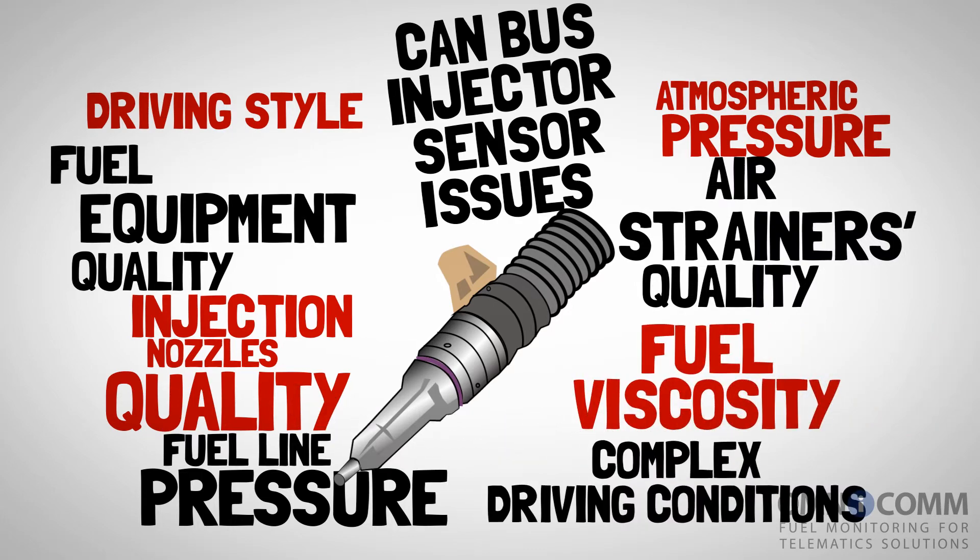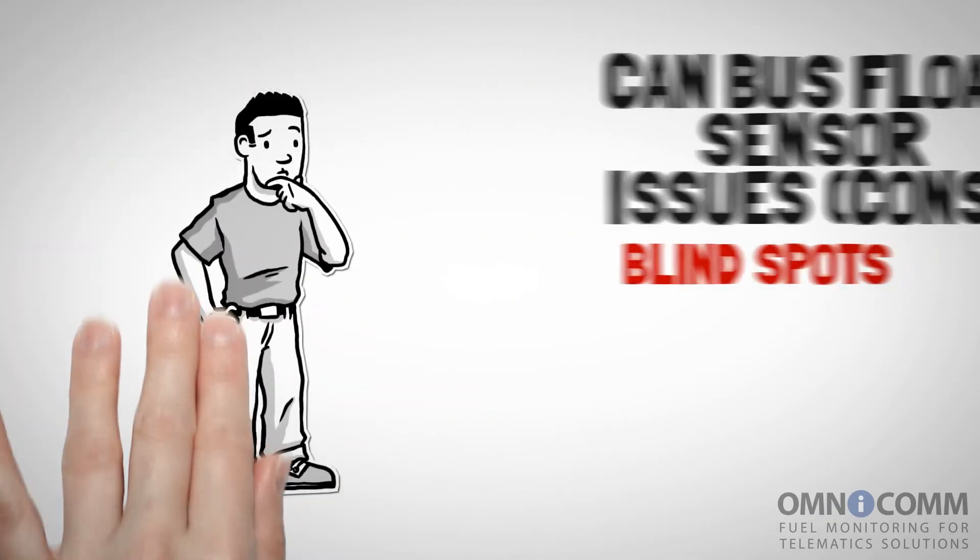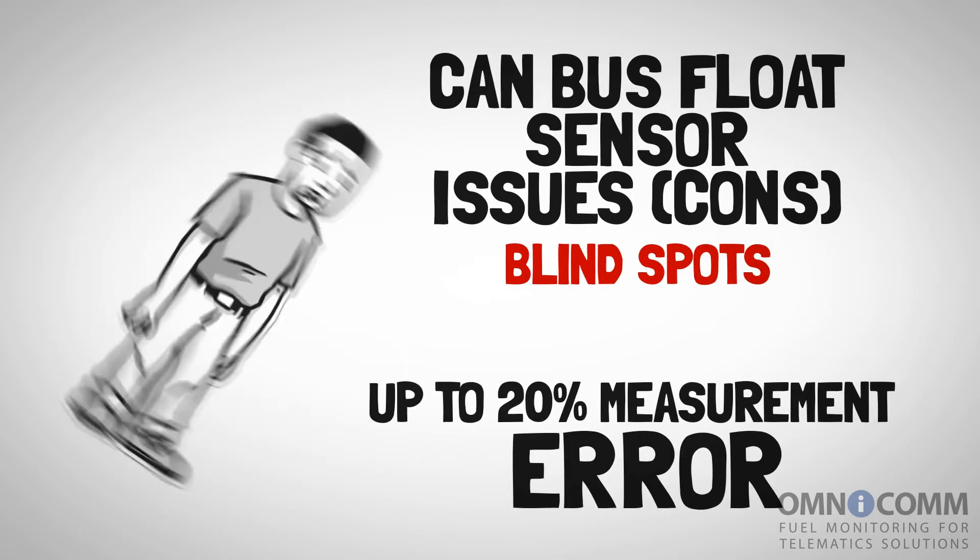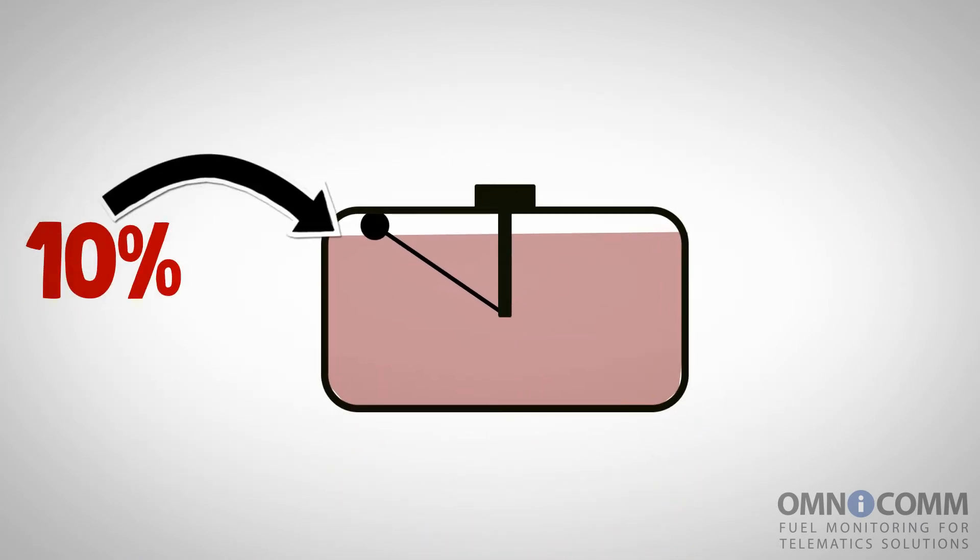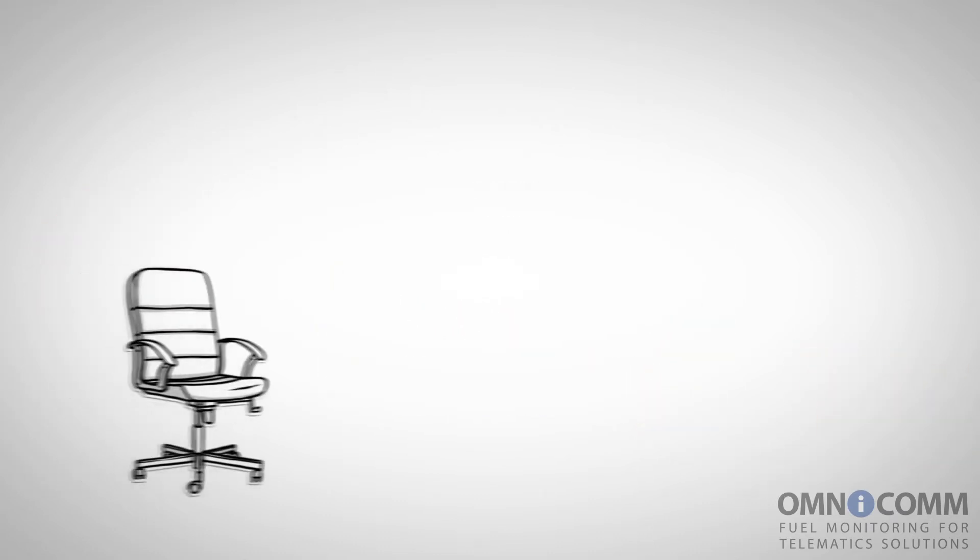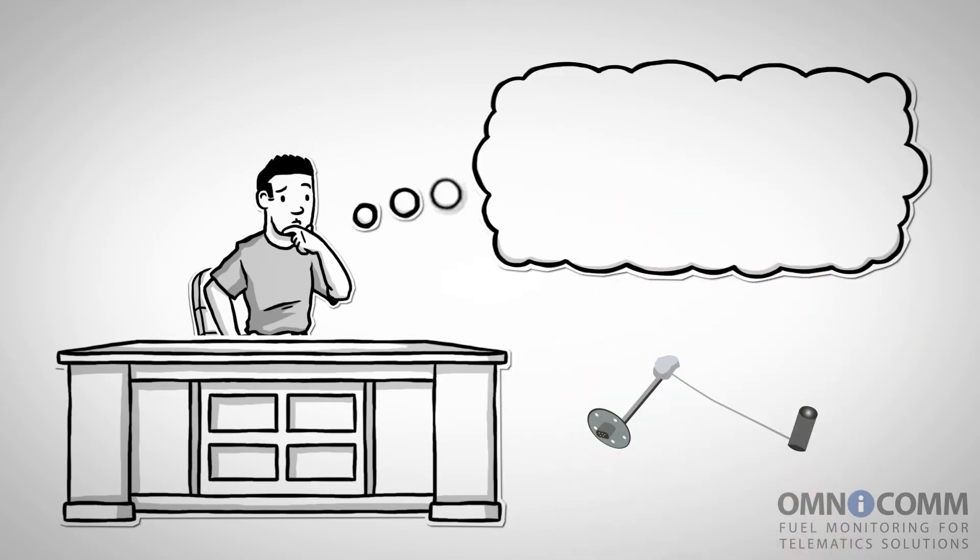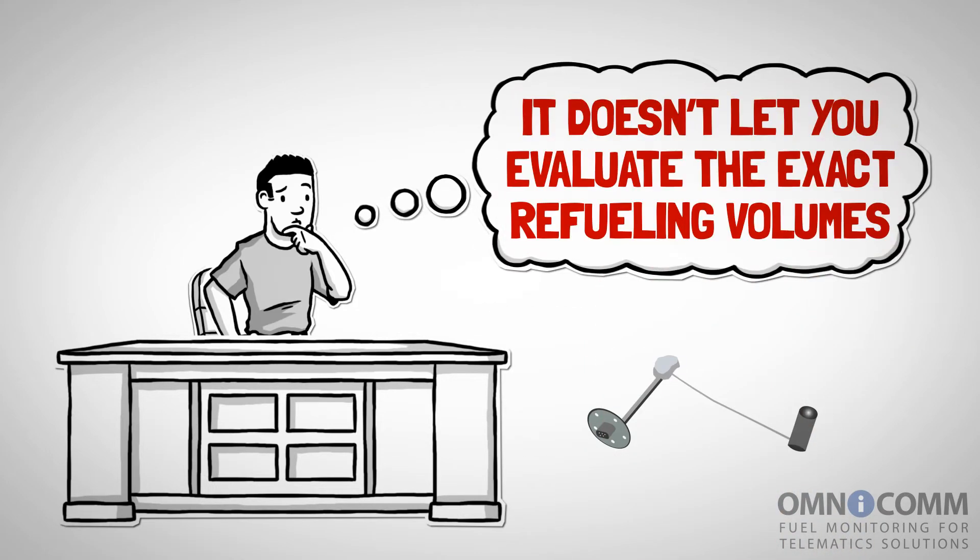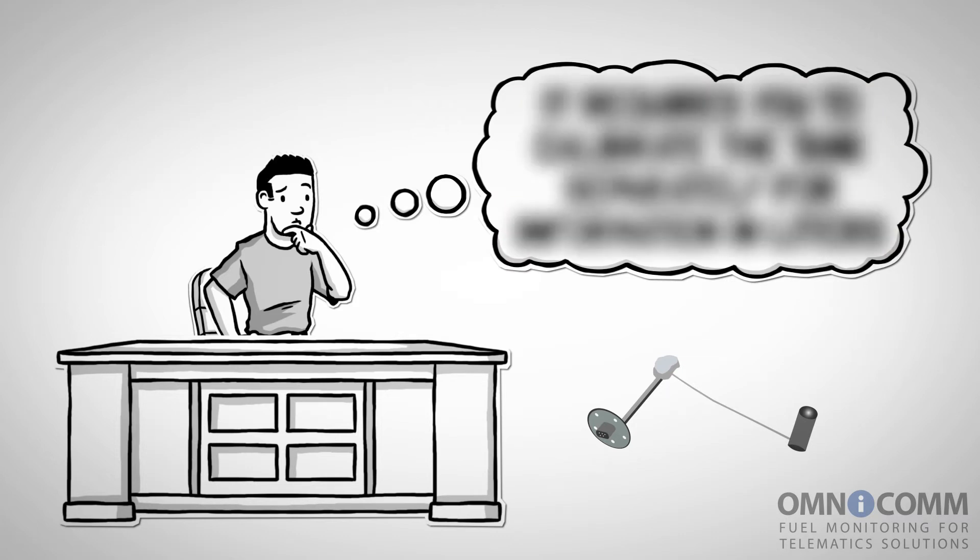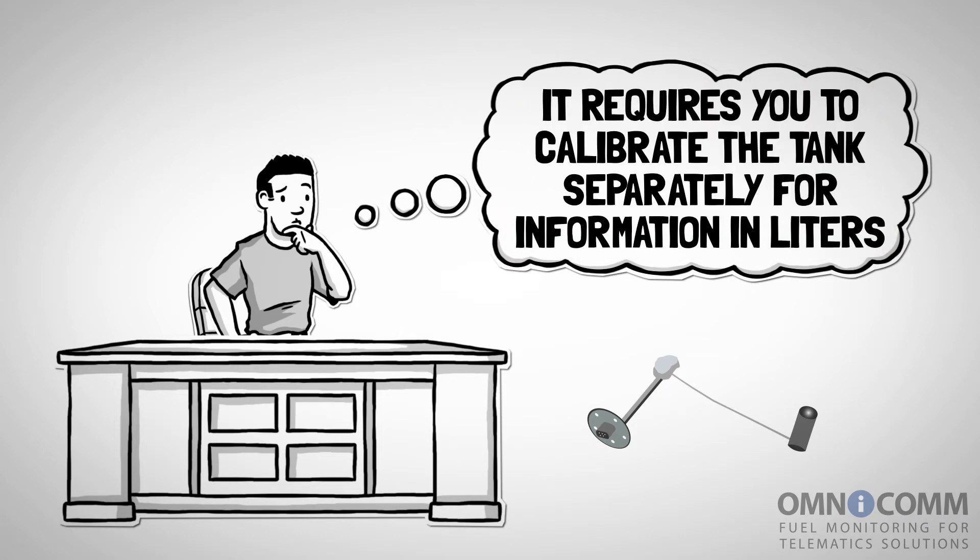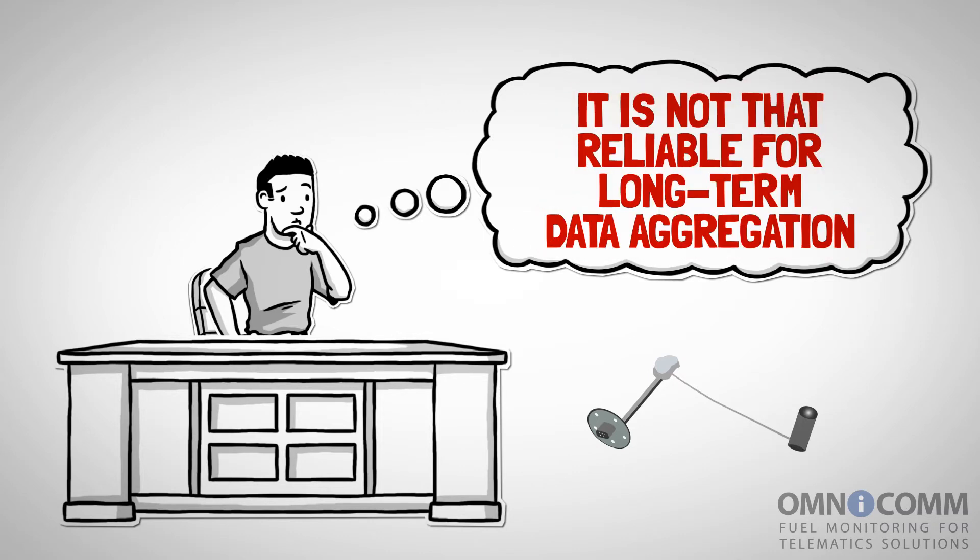Inaccuracy increases with operation time. The serious drawback of CAN Bus Float Sensors lays in the two blind spots that cause up to 20% error of the value of the total refuel. It's too easy to compromise the readings of the CAN Bus Injector Sensor. Plus, the CAN Bus Float Sensor is limiting your options. It doesn't let you evaluate the exact refueling volumes. It requires you to calibrate the tank separately for information in liters. It is not that reliable for long-term data aggregation.